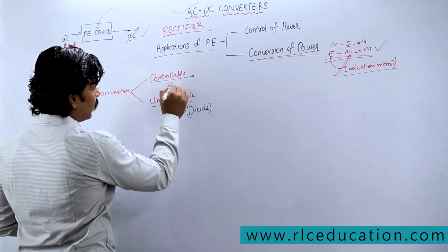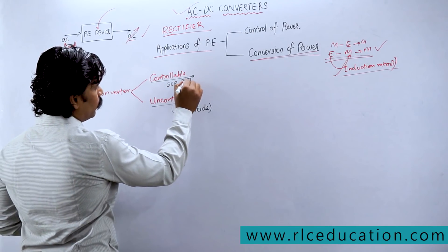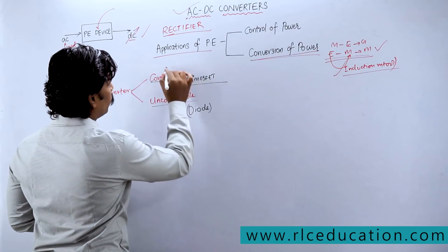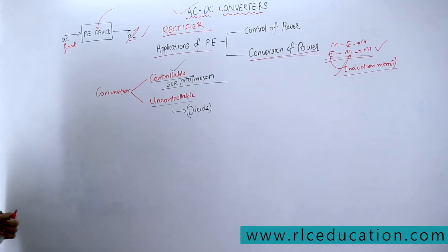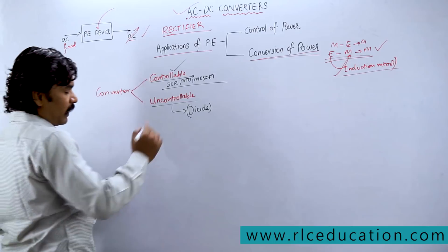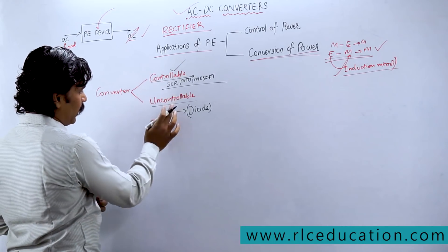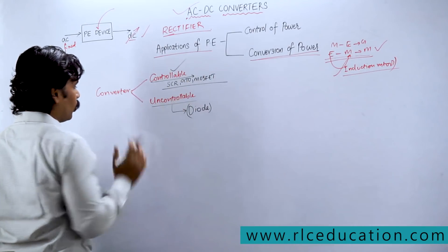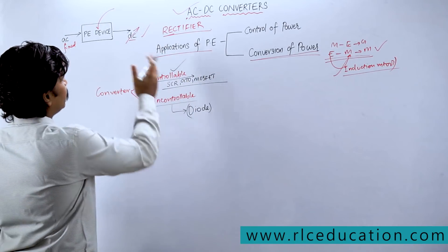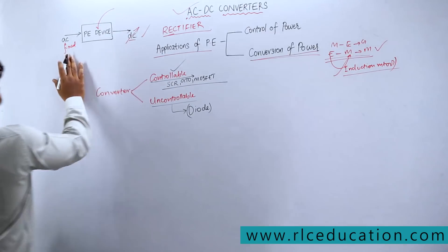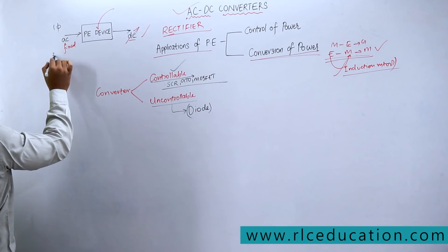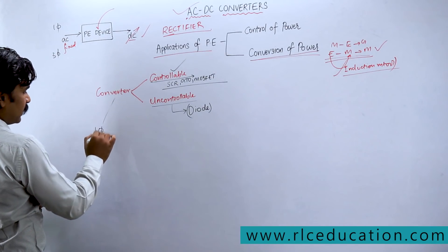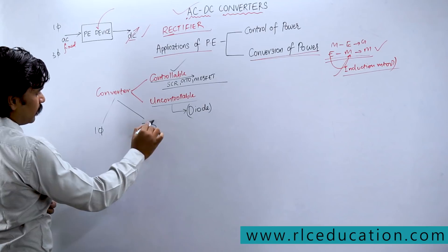Apart from the diode, any other switch — SCR, GTO, MOSFET — makes it a controllable converter. In our syllabus we have to study both controllable and uncontrollable rectifiers. Since AC is available in two forms — single phase and three phase — converters are classified as single-phase or three-phase converters. Another classification is half wave and full wave converters, based on whether you control one half cycle or the full cycle of the input.